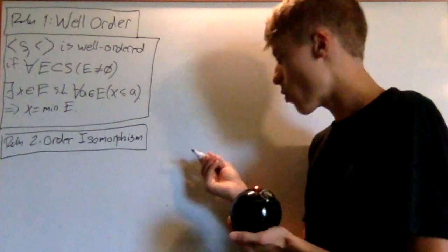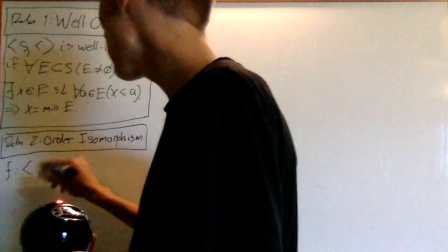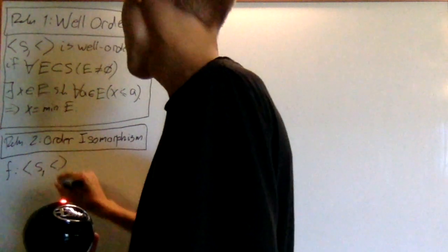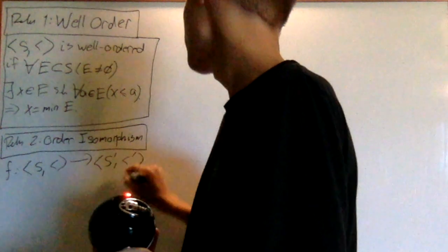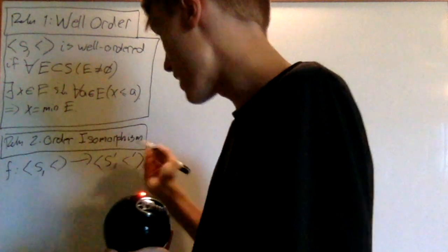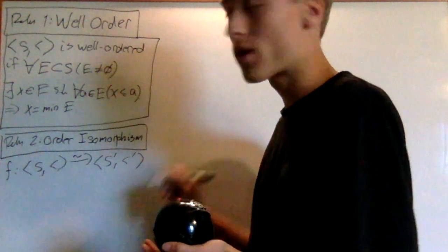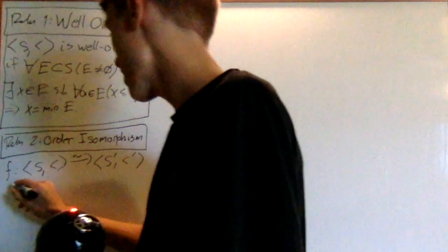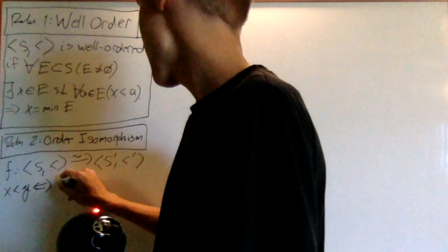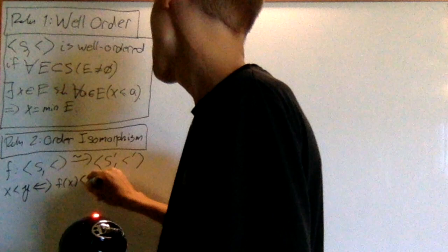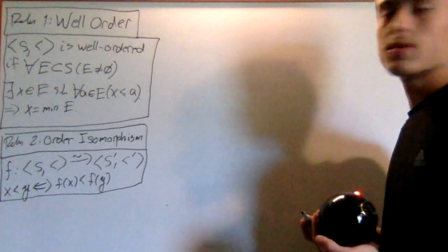An order isomorphism is a map f that takes you between two ordered sets — s under less-than, and s-prime under less-than-prime. It has the property that it's bijective, and also that it is order-preserving: x less-than y is equivalent to f(x) less-than f(y). That's a pretty basic definition.